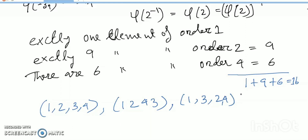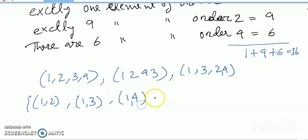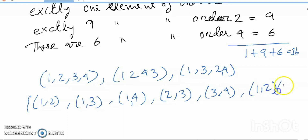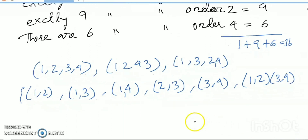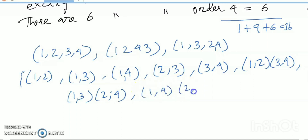There are 9 possible elements of order 2. The images can be: (1,2), (1,3), (1,4), (3,4), (1,2)(3,4), (1,3)(2,4), (1,4)(2,3) — counting through positions 1 through 8 for order-2 elements.